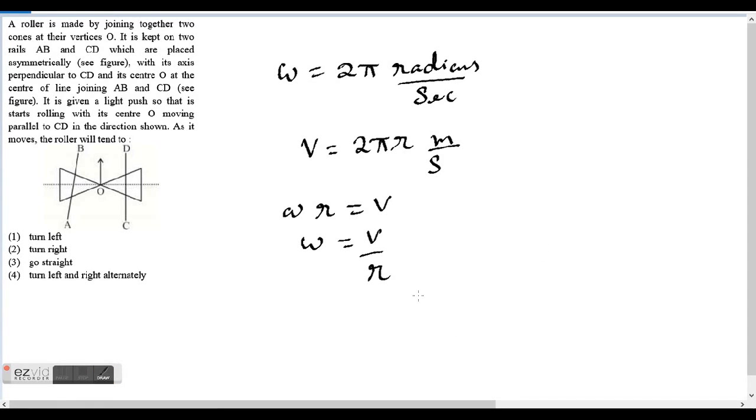Question number 5 of J-Main 2016. A roller is made by joining together two cones at their vertices O. It is kept on two rails AB and CD which are placed asymmetrically with its axis perpendicular to CD.